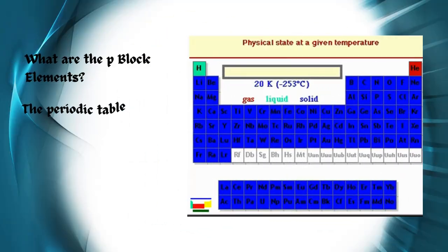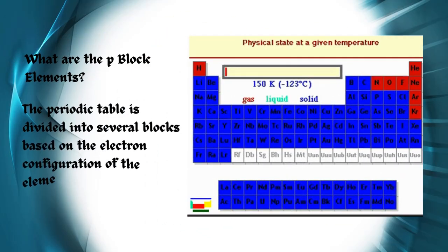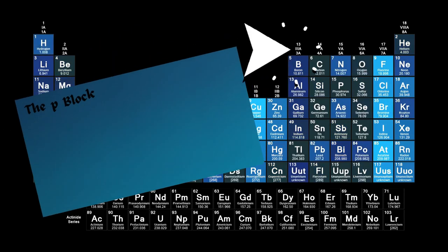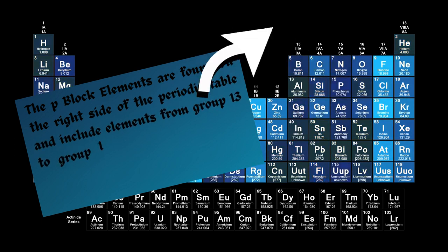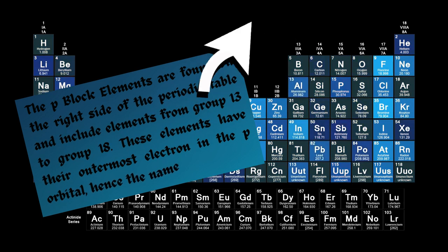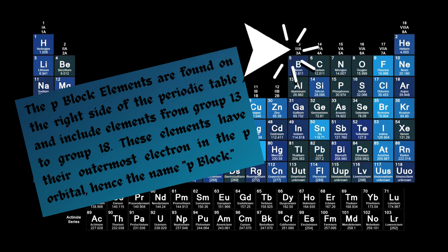What are the p-block elements? The periodic table is divided into several blocks based on the electron configuration of the elements. The p-block elements are found on the right side of the periodic table and include elements from group 13 to group 18. These elements have their outermost electron in the p-orbital, hence the name p-block.